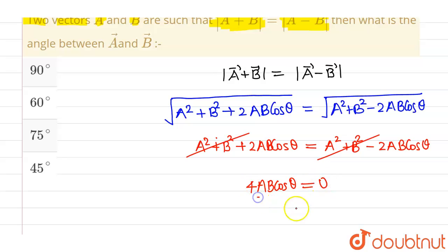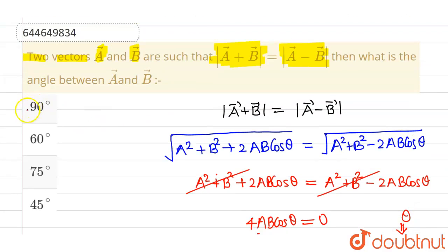Now since A and B cannot be 0, therefore from here I will be getting cos theta equals to 0. Now for cos theta to be 0, angle should be equals to 90 degree. So this is the value of theta. So the correct option is option 1 and rest all options are incorrect.